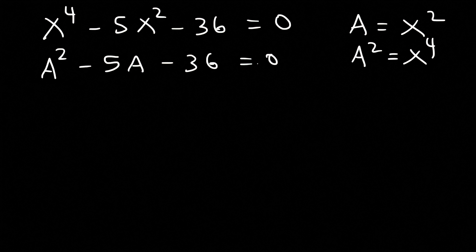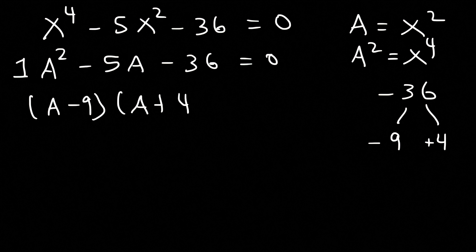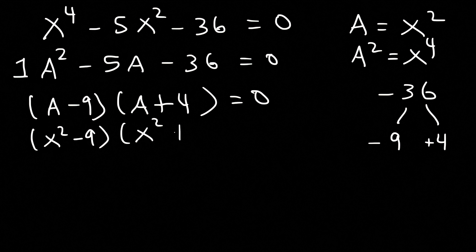So now we have a trinomial with a leading coefficient of 1. What two numbers multiply to negative 36 but add to negative 5? That's going to be negative 9 and positive 4. Negative 9 times 4 is negative 36, and negative 9 plus 4 is negative 5. So to factor it, it's going to be a minus 9 and a plus 4. Now I'm going to replace a with x squared, so it's the same as x squared minus 9 times x squared plus 4.